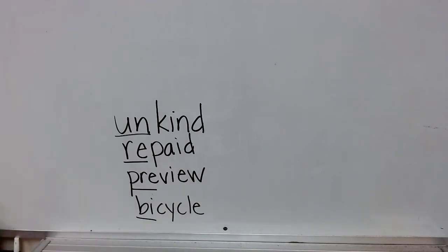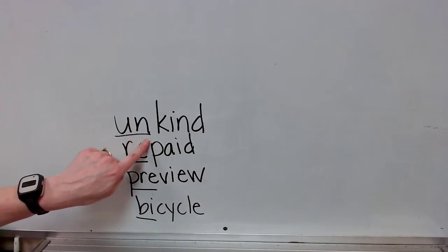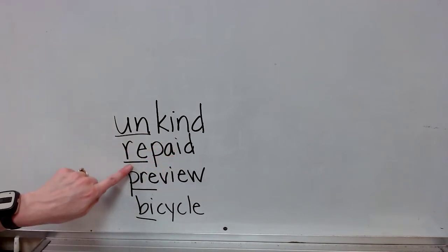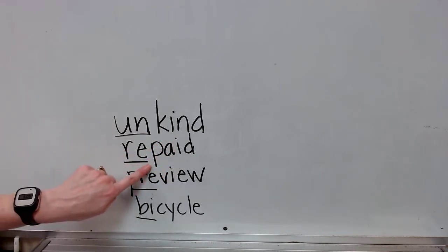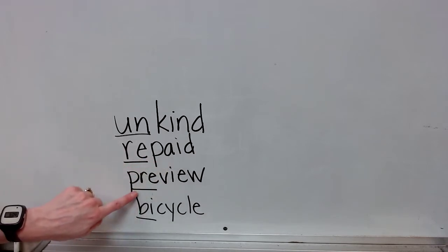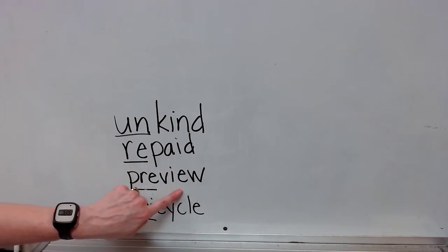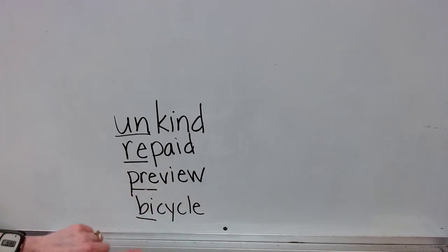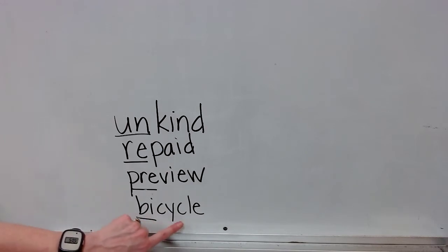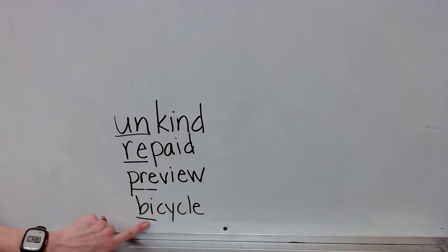Let's talk about the meanings of these prefixes quickly. Un means not or undo, so unkind means not kind. Re means again, so repaid means to pay again. Pre means before, so preview means to view before. Bi means two or both, so a bicycle is a vehicle with two wheels that turn.